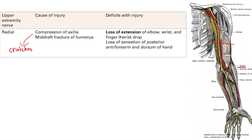What's going to happen is you're going to get loss of extension — that's the key word. The radial nerve is involved in extension of the elbow, the wrist, and the fingers. So if you lose all that, you're going to see a wrist drop because you can't extend your wrist. You're also going to get loss of sensation over the back side of the arm: posterior arm, posterior forearm, and the dorsum of the hand.